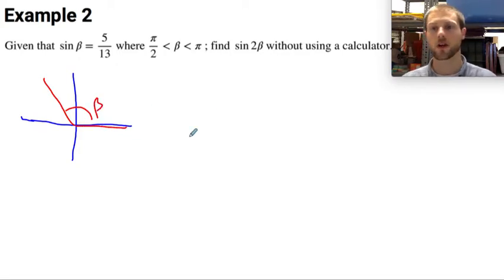And why is that important? That tells me that cosine is also negative of whatever this angle beta is, since this angle falls in the second quadrant.